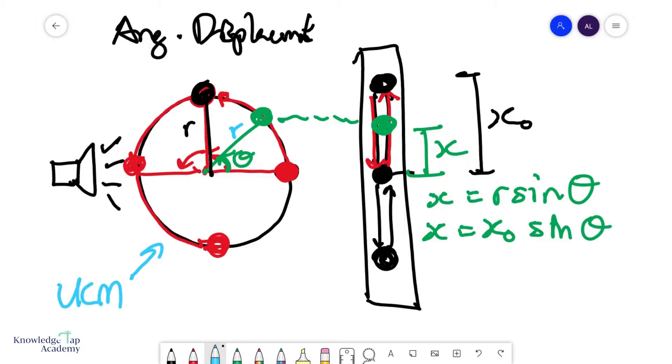And remember since this guy is in uniform circular motion, then θ is simply the angular velocity times t. And therefore I can describe the displacement from equilibrium x as equals to its amplitude x₀ some sinusoidal function sin(ωt), a wonderful way to characterize SHM.